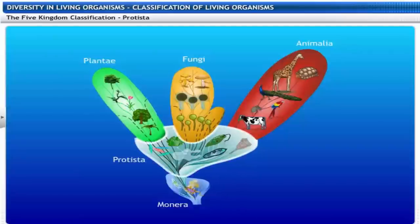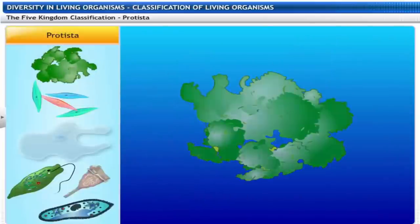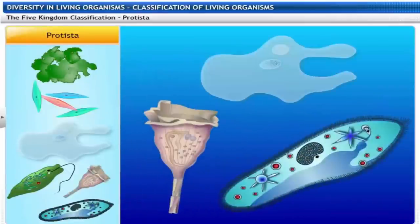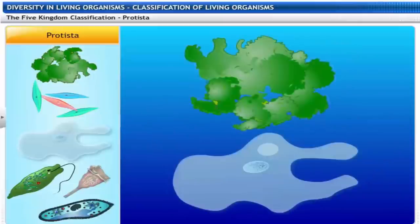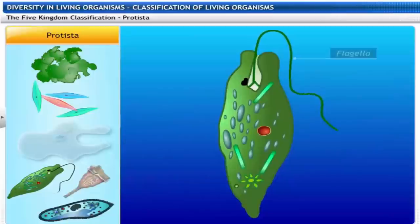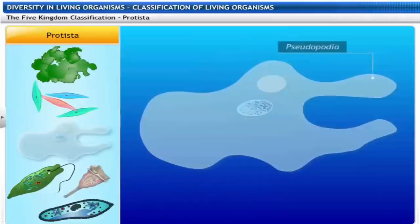Members of the kingdom Protista are algae, diatoms and protozoans. Protists include plant-like and animal-like organisms. Their mode of nutrition can be autotrophic or heterotrophic. They are unicellular and the simplest form of eukaryotes. Some protists move with whip-like flagella, hair-like cilia, or finger-like pseudopodia.